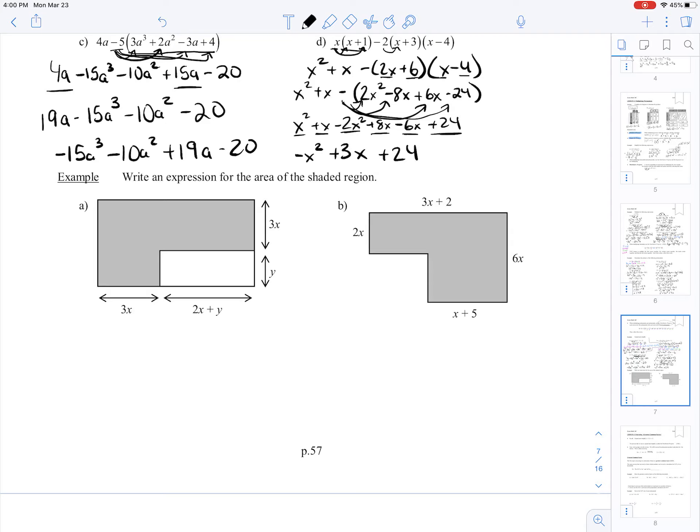All right, so we're trying to write an expression for the area of the shaded region. In this question, I want to know what the area of this is. Can we agree that the area of this is the area of the big square minus the area of the little square? That equals the area of the shaded region.